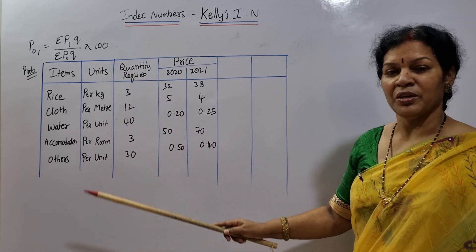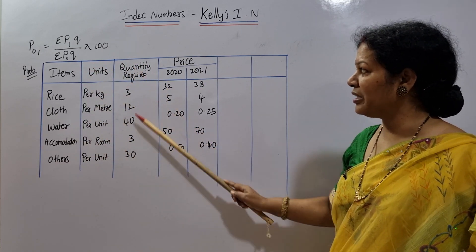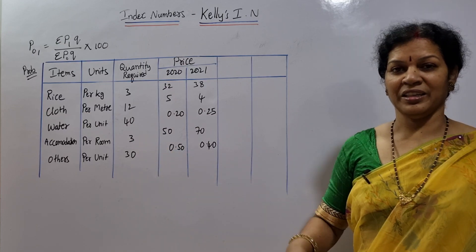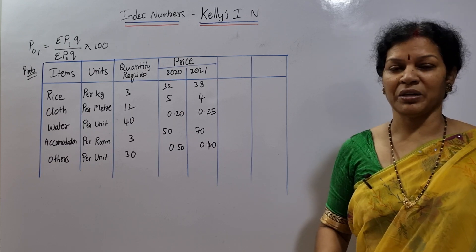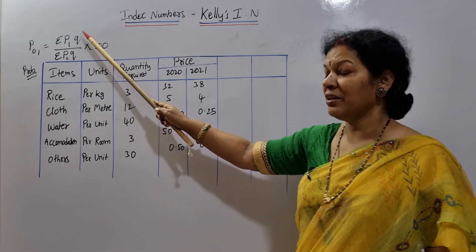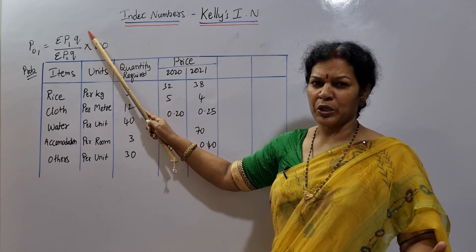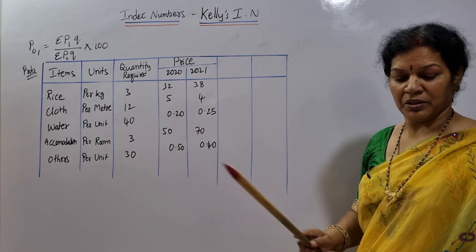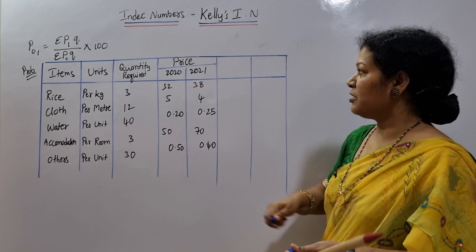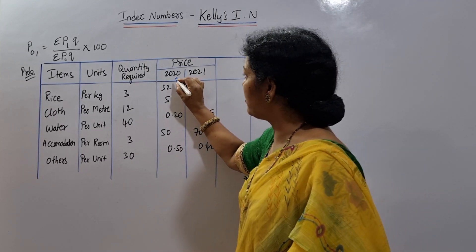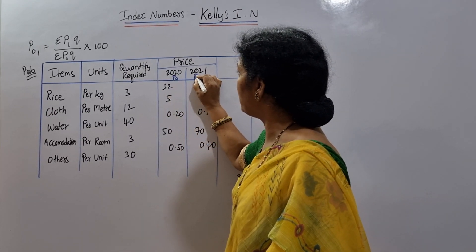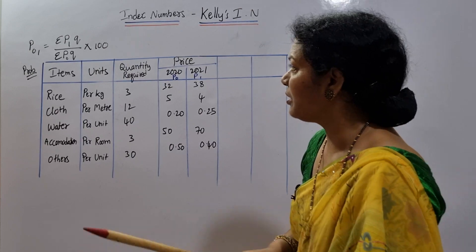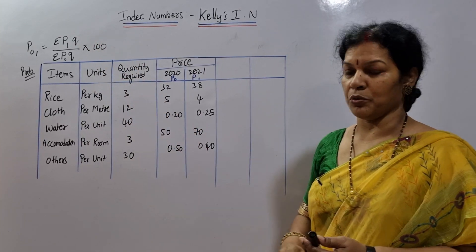This is the problem given to us. Items are given, units quantity is required, and only one quantity is given — whether it is the current year or previous year, only one quantity is provided. That is why as per the formula we have only Q, not q1 or q0. Price 2020 is the base price, so this is P0, and price 2021 is P1.